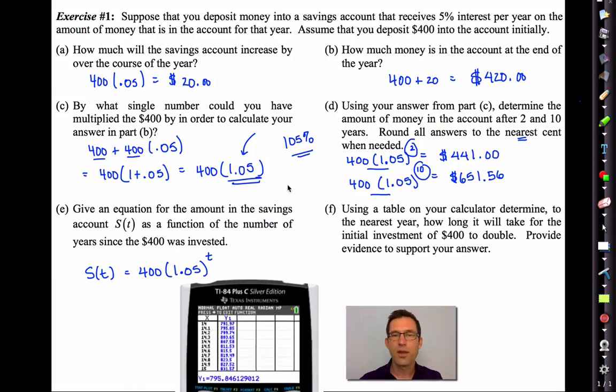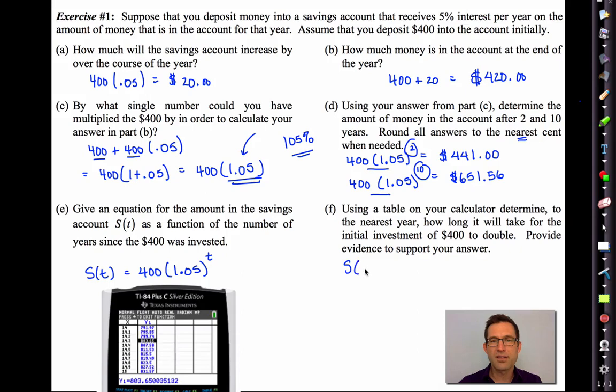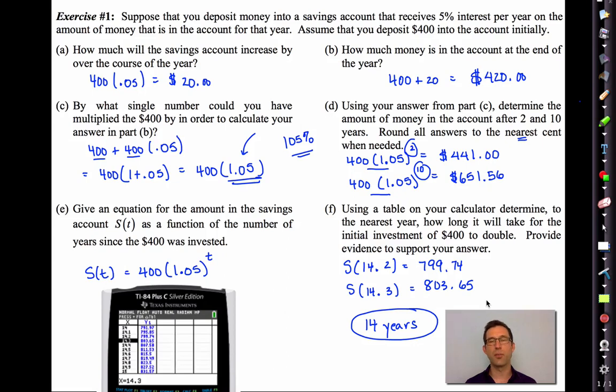What we do see is that at 14, we're at 791.97. And at 15, we're at 831.57. So, you know, we want to get it to the nearest year. It looks like it's probably closer to 14 than 15, but I'm not really sure. So let's do this. Let's go back into our table setup. Let's change our table start to 14. And let's now change how often our table increments itself or our delta table to 0.1 to one tenth of a year.